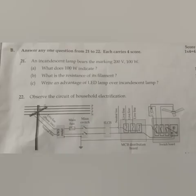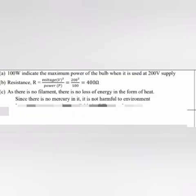(c) Write an advantage of LED lamp over incandescent lamp. Answer: As there is no filament, there is no loss of energy in the form of heat. Since there is no mercury in it, it is not harmful to environment.